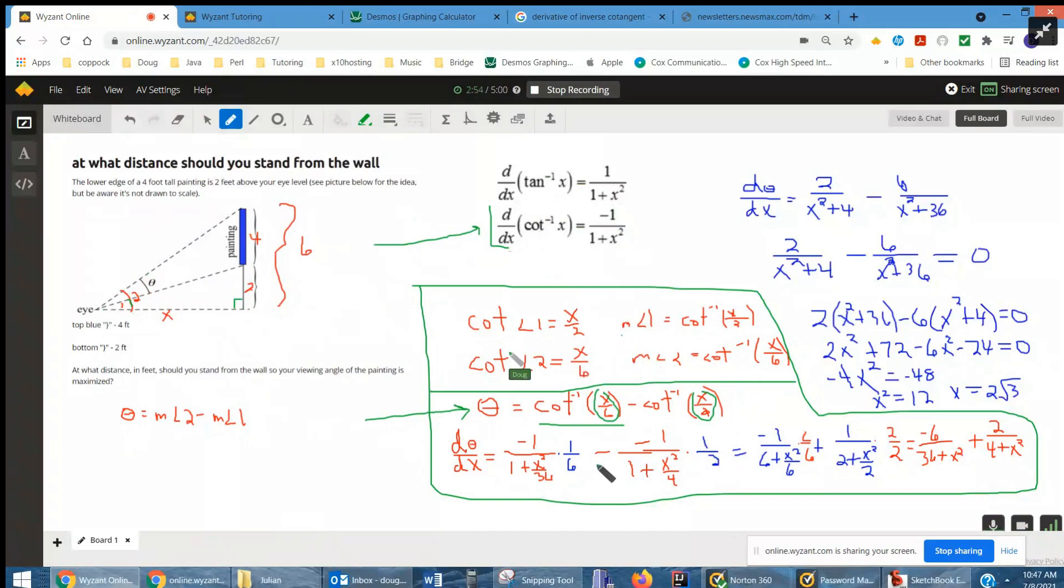If we simplify that by distributing this 6 over the denominator and this 2 over the denominator, we get what's in blue over here. And then to make it a little bit easier, simplify the two complex fractions by multiplying top and bottom by 6, and top and bottom of this one by 2. And there's our final form for the derivative of theta with respect to x, which I've rewritten up here.